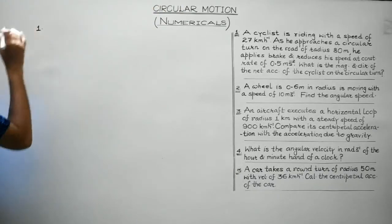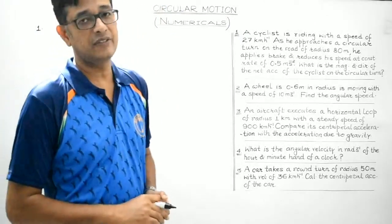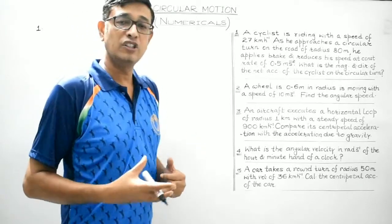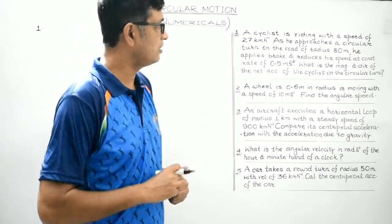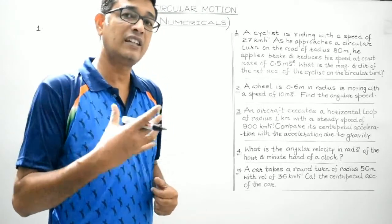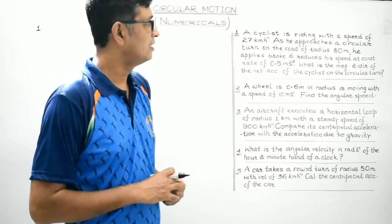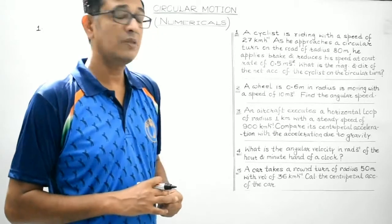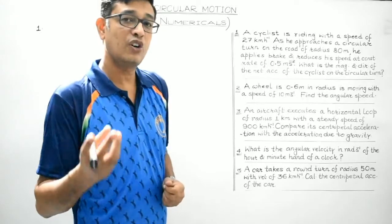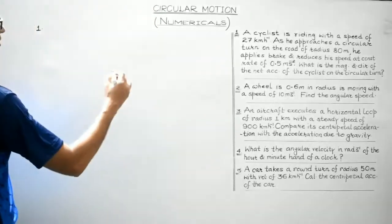The first question is: a cyclist is riding with a speed of 27 km per hour. As he approaches a circular turn on the road of radius 80 metres, he applies brakes and reduces his speed at a constant acceleration of 0.5 metres per second square. We are supposed to find out the magnitude as well as the direction of the net acceleration of the cyclist on the circular turn.